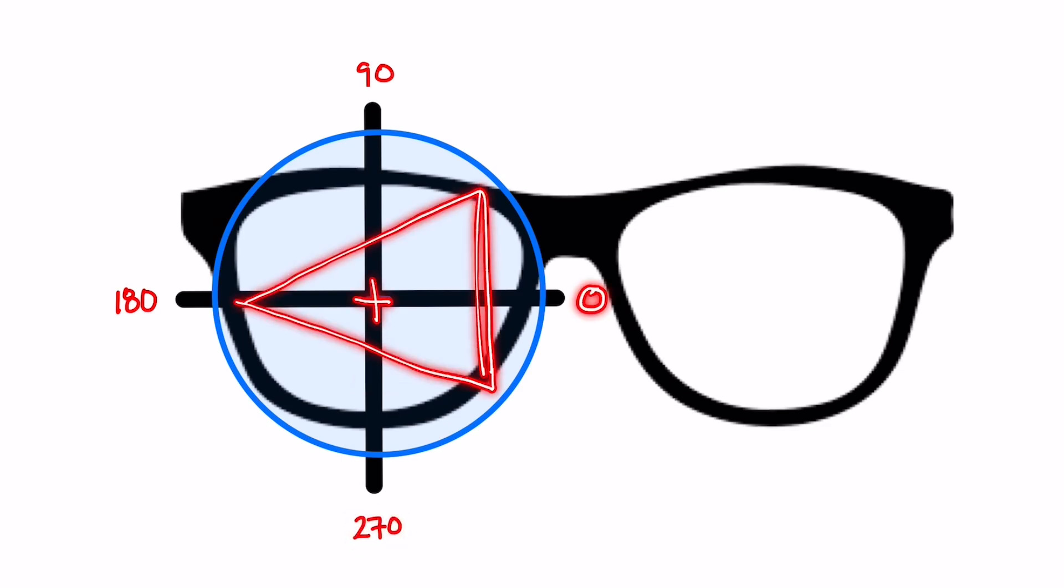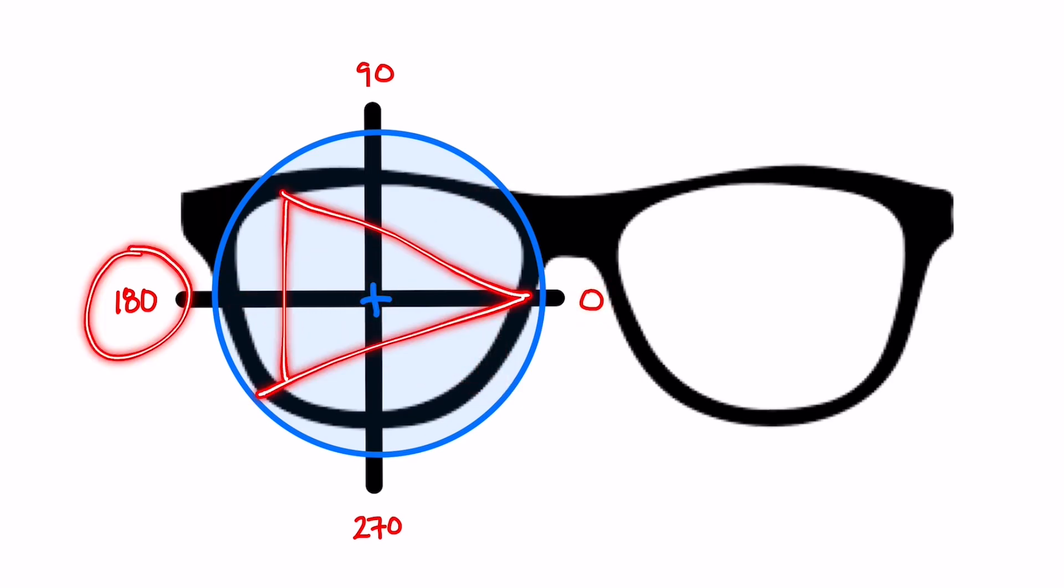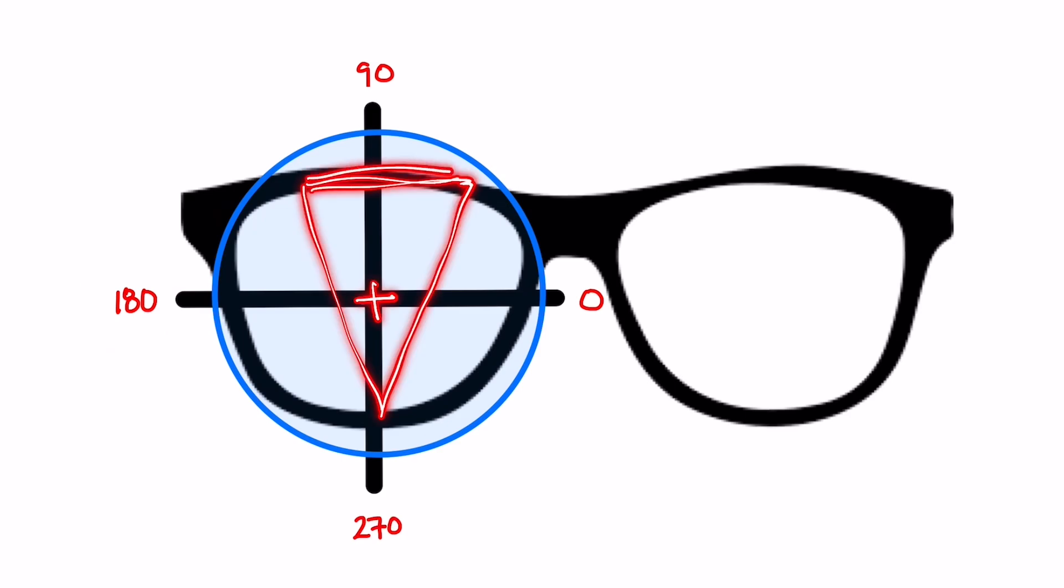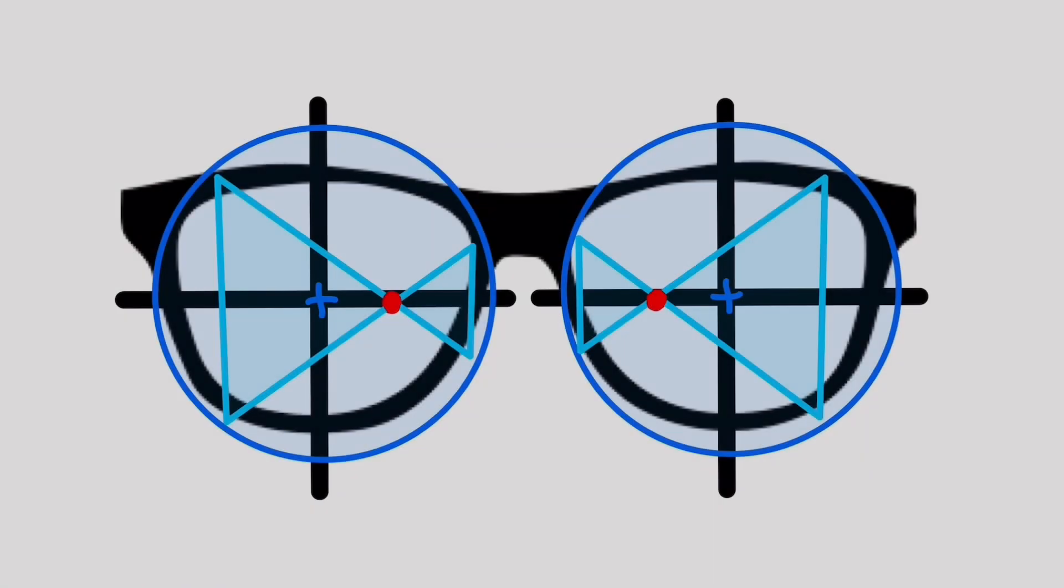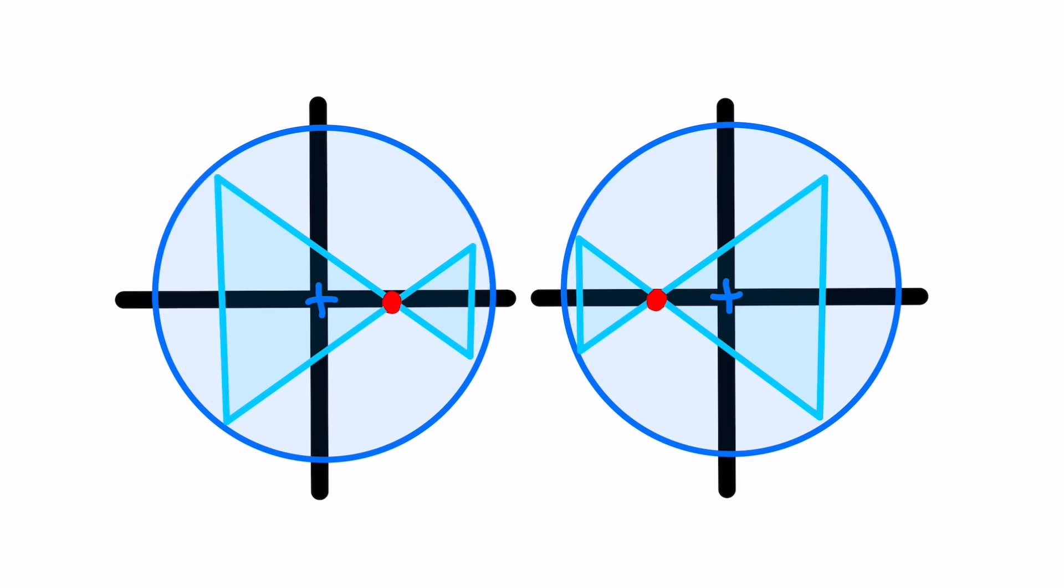If the base of the prism is located here, it has a 0 base direction. If it's located here, it's 180 base direction. If it's located here, it has a 90 base direction. Or if it's located directly down, it's 270.